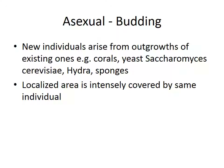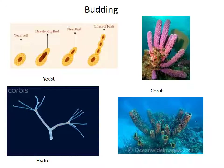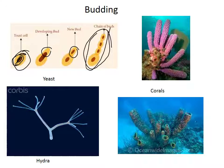You can also do asexual reproduction by budding, where new individuals arise from outgrowths of existing ones. For example, corals — that's how corals reproduce, and corals are animals. Yeast like Saccharomyces cerevisiae also buds. Hydra and sponges all do asexual reproduction by budding. The advantage is that the localized area is intensely covered by the same individual. Here is a yeast cell: it develops a bud, that bud develops another bud, and you get a whole chain of buds taking up a bigger area.